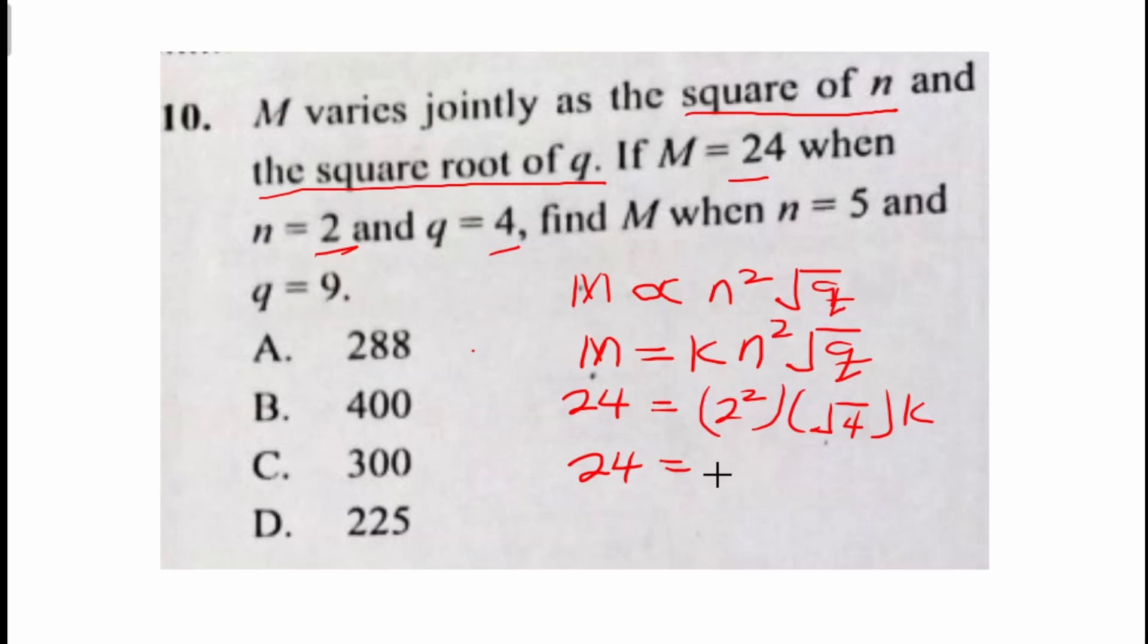Now so that implies that 24 will be equal to 2 squared is 4 multiplying square root of 4 is 2k. And 24 will be equal to 8k. Dividing both sides by 8, 3 will be equal to k.